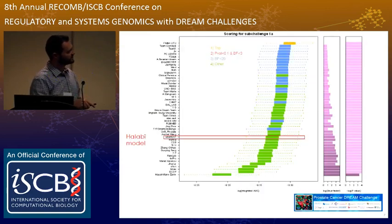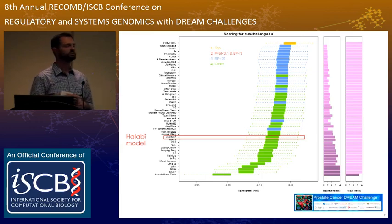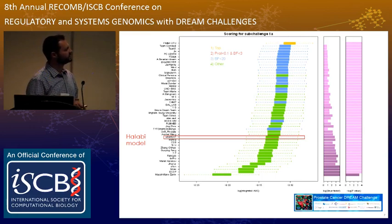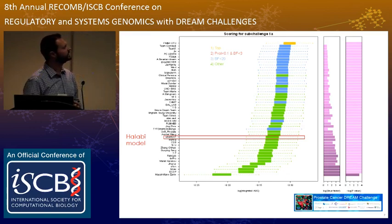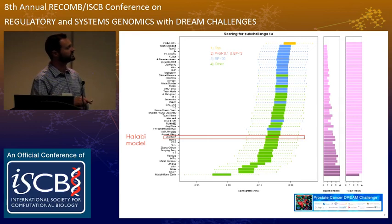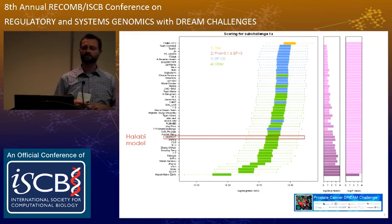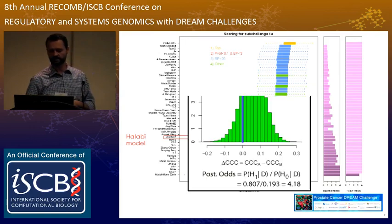This shows teams ranked by overall performance, with resampling giving distributions on their scores. What you see here is performance related to the integrated area under the curve. We also plotted the Bayes factor and negative log p-value of significance over the Halabi model, showing that almost everybody outperformed the standard model. Our top-performing team significantly outperformed everybody else, so we had a very clear winner for sub-challenge 1A.